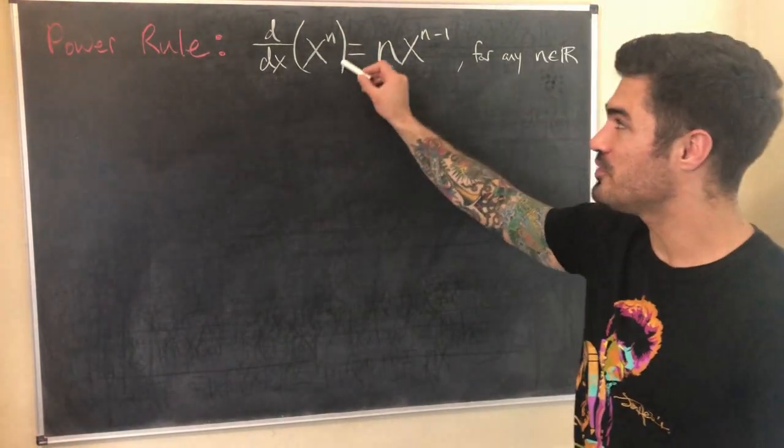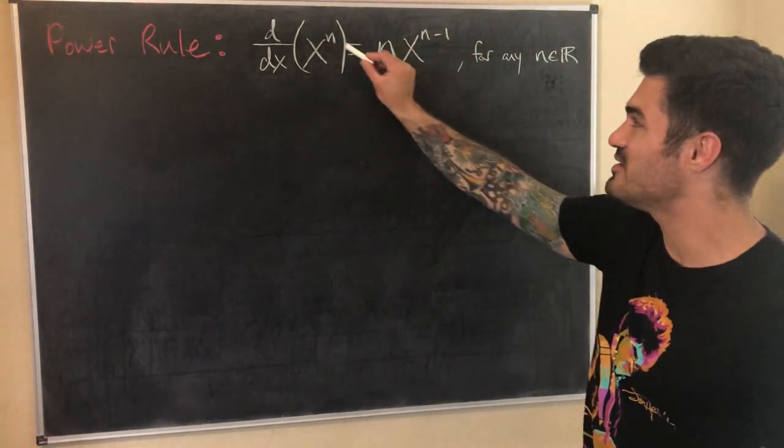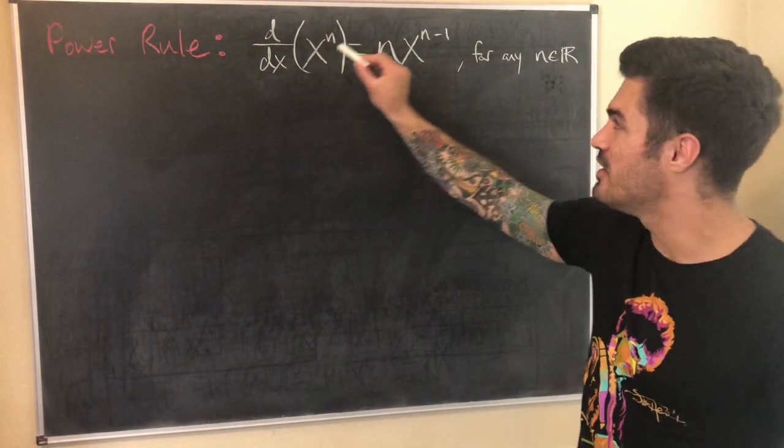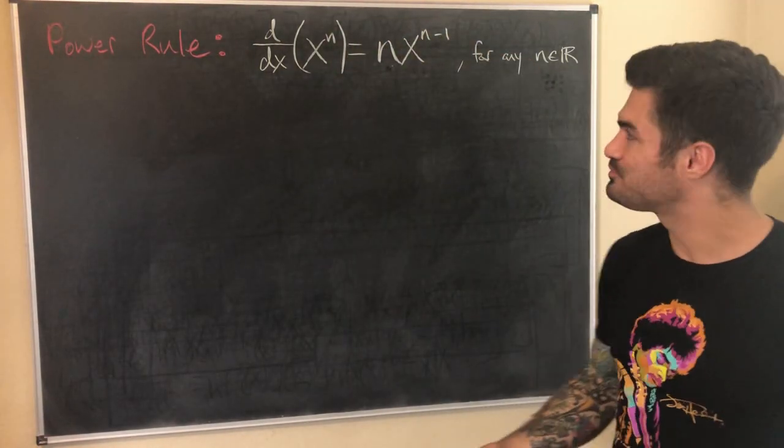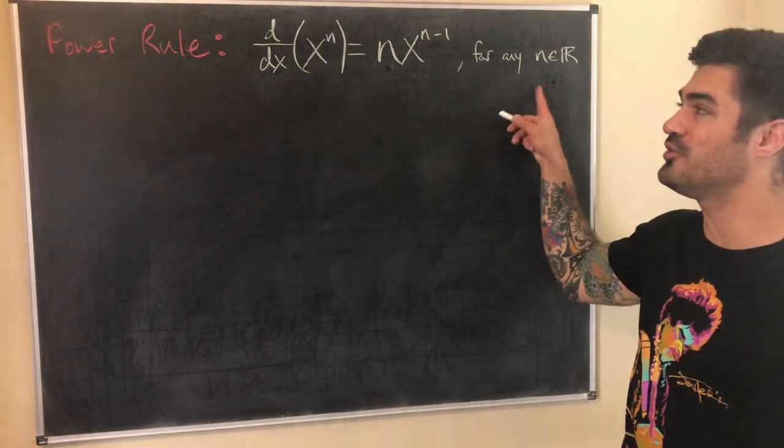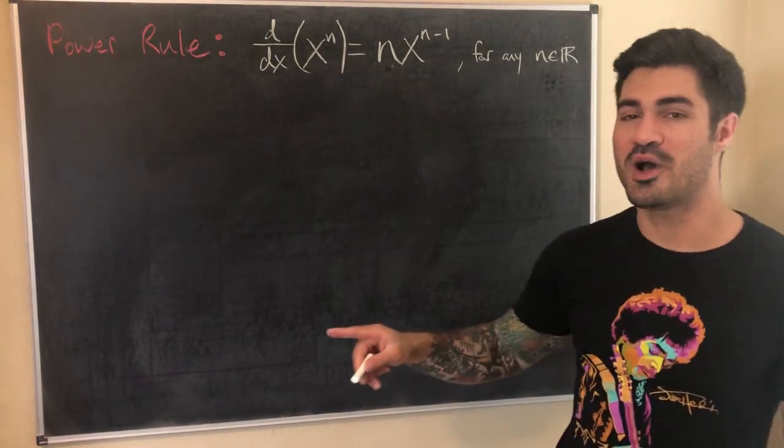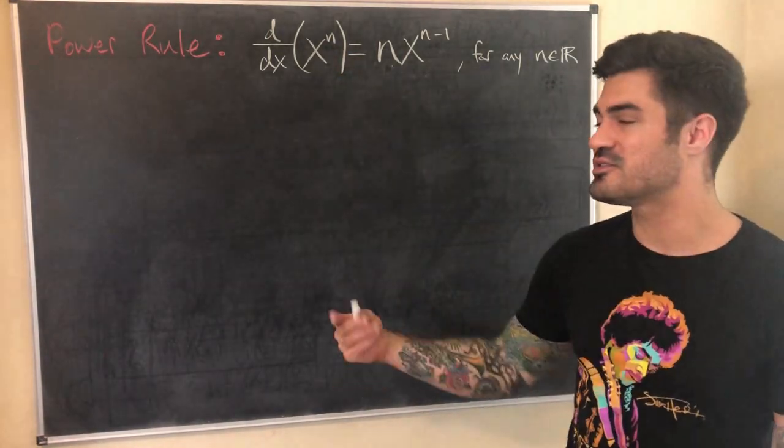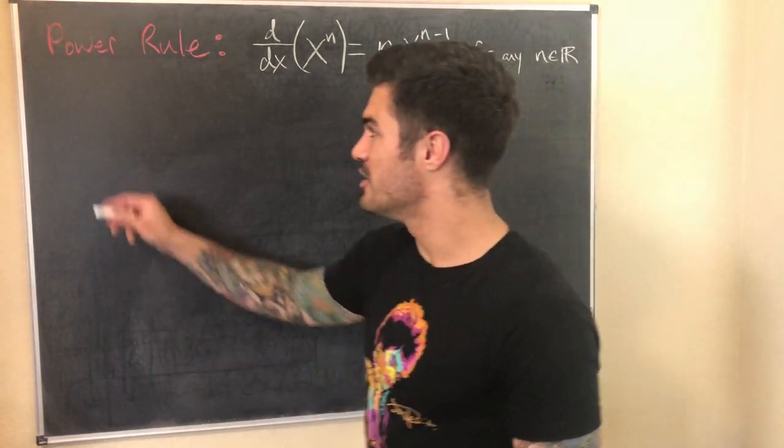Let's go ahead and jump into it. The power rule, hopefully we know it by now. Most of us probably think of it as the n, the exponent, comes out in front, and then we subtract 1 from the exponent. Turns out this works for any real number n. So n could be pi, it could be e, doesn't matter, still works for any real number n. So let's prove it.